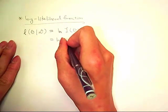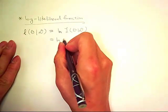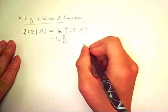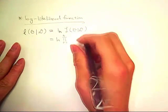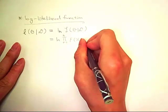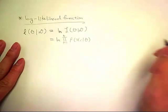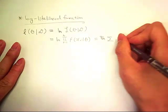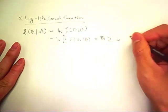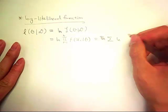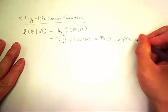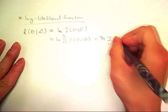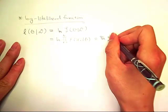As we saw earlier, it can be rewritten as the product of the probability of observing each sample x sub i given theta. And then we can rewrite this as the sum of the log probability of observing each sample x sub i given theta, summing it from 1 to n.